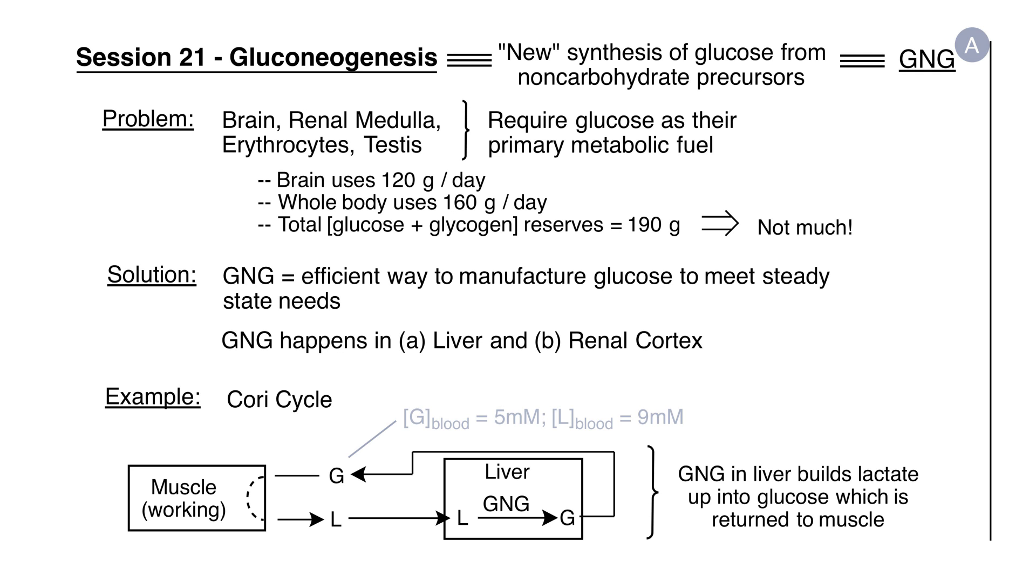To get an idea of how gluconeogenesis works, let's take a look at the box here at the bottom of panel A. You see a muscle working very hard as evidenced by the fact that it's secreting lactate out into the blood. The lactate travels from the working muscle by the blood to the liver where the lactate is taken in. The pathway of gluconeogenesis with energy and reducing equivalent input rebuilds glucose from that lactate precursor. The glucose is then sent back out into the blood, returns to the muscle, enabling the muscle to continue hard work. This functional relationship between a muscle and the liver is called the Cori cycle.